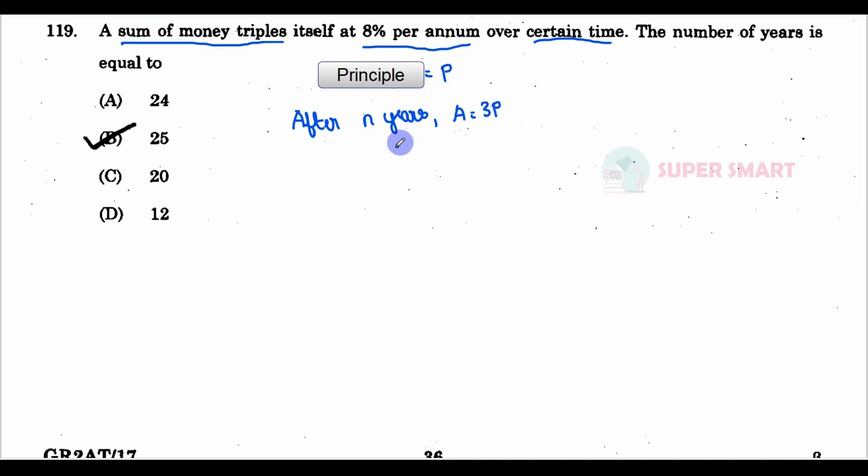Now the rate is 8%. We know that amount equals simple interest plus principal. The amount is triple the principal. So we can write 3P = SI + P, where SI = (P × n × R)/100.